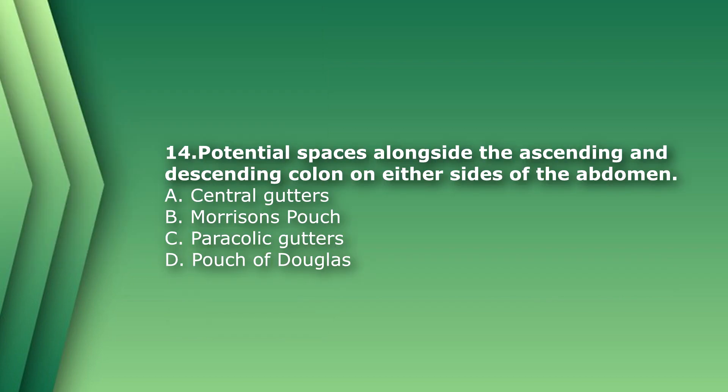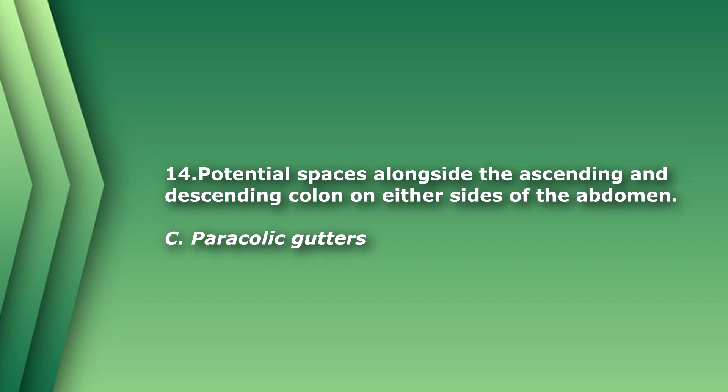Question 14: Potential spaces alongside the ascending and descending colon on either side of the abdomen are called: A) central gutters, B) Morrison's pouch, C) pericolic gutters, or D) pouch of Douglas. Morrison's pouch is between the liver and the kidney. The pouch of Douglas is in the pelvis. There is no such thing as central gutters. The answer is C) pericolic gutters.